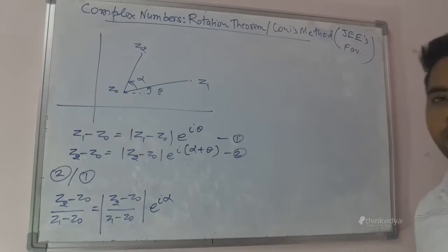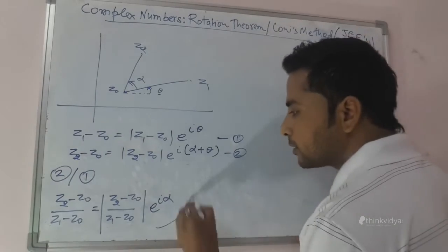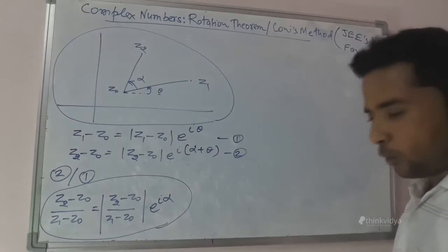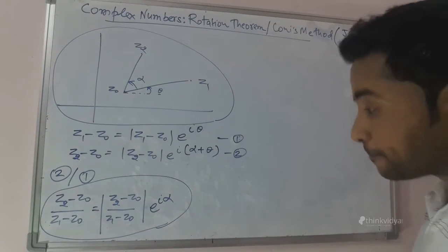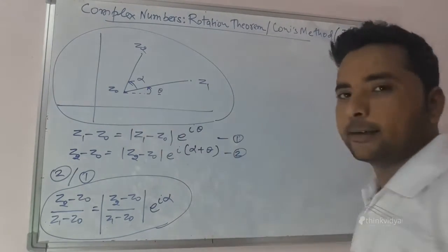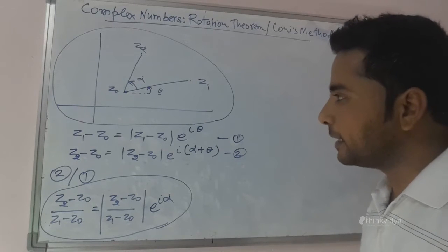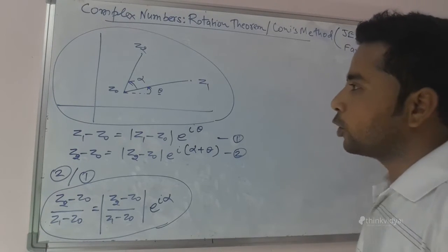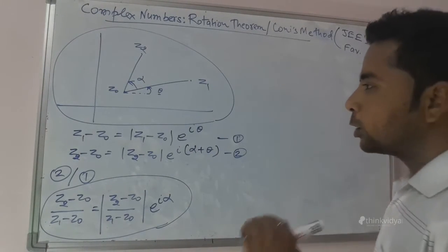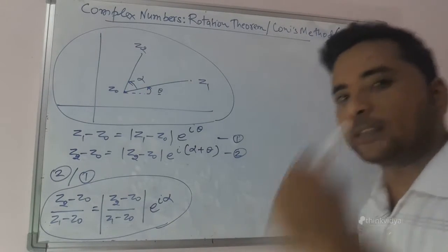So this is the derivation of Coney's method or the rotation theorem. Focusing on this final statement and going back to the situation, what we should be able to relate is that there was a point Z1 which got rotated about Z0 and became Z2. It got rotated by an angle alpha in the positive, anticlockwise direction.